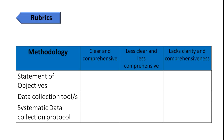A rubric will specify the criterion and the extent of performance. For example, for the criterion of statement of objectives: they are clear and comprehensive; they are less clear and less comprehensive; or they lack clarity and comprehensiveness. So if the statement of objectives is very clear, you would say it's clear and comprehensive; if data collection tools lack clarity, you would say they lack clarity and comprehensiveness.